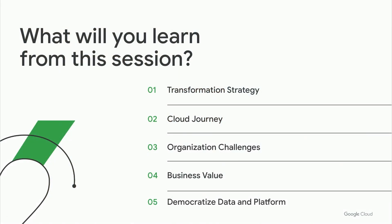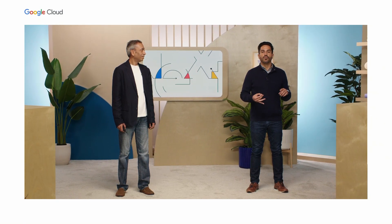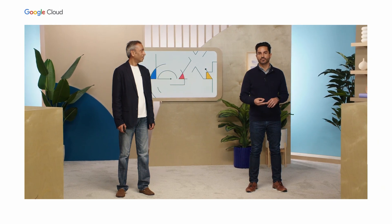Today we're going to be learning about data transformations using Google's Data Cloud with a Data Mesh architecture. In the first part of the session, I'll provide context on some of the challenges organizations are facing and how Google's Data Cloud can be used to address those. In the second part, Vikas will bring it to life with a real example of their data transformation. We're going to cover things like transformation strategy and journey, before and after architecture, as well as cultural and organizational changes.